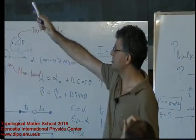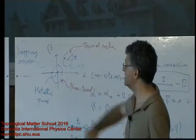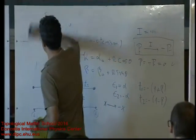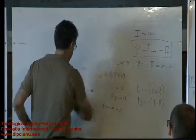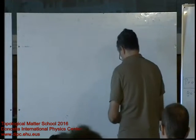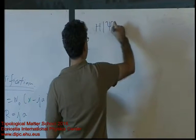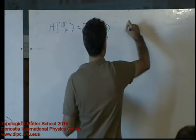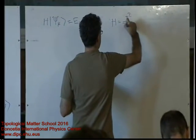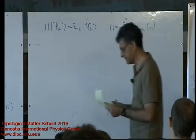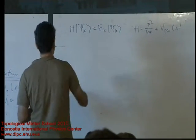That's the Bloch-to-Wannier transformation, and the second equation is the inverse, the Wannier-to-Bloch transformation. As a simple exercise, let's check the consistency of the two. The psi's are the eigenfunctions, where H has a kinetic energy term and a periodic potential — the typical setting for electrons in crystals.